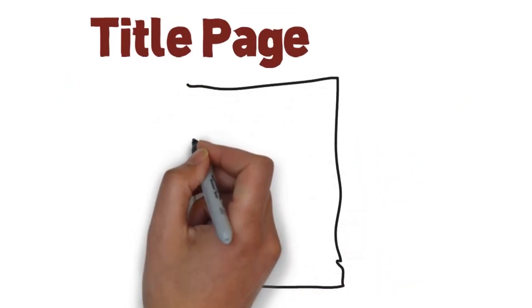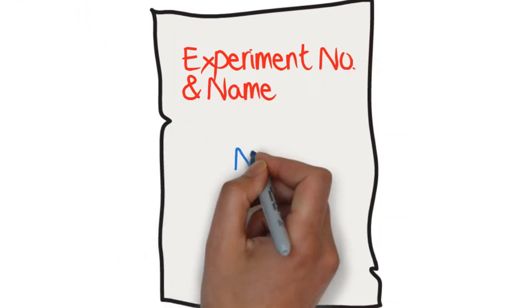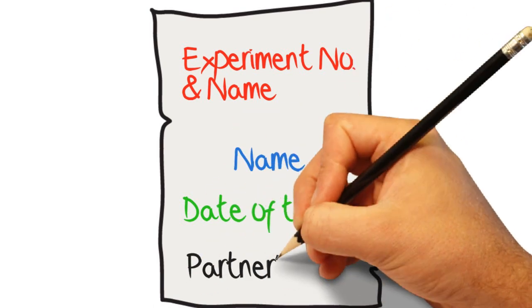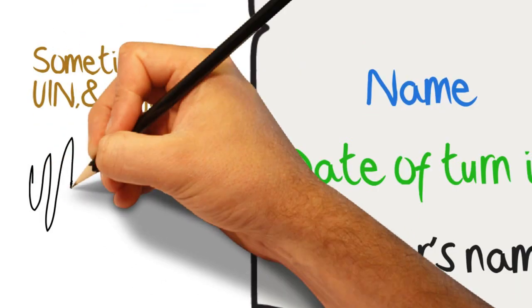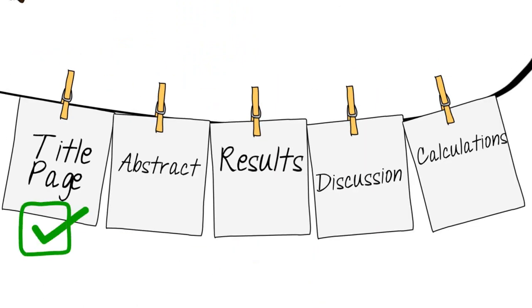For the title page section, you need to write the experiment number on the top of the page, then your name, the turn-in date, and finally your partner's name. Sometimes a professor might ask you to write your UIN or your signature, but for the chemistry lab report at this point you don't need to do that.